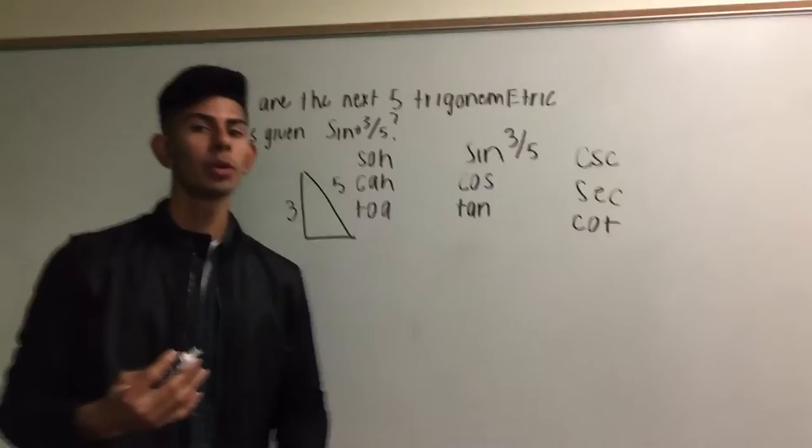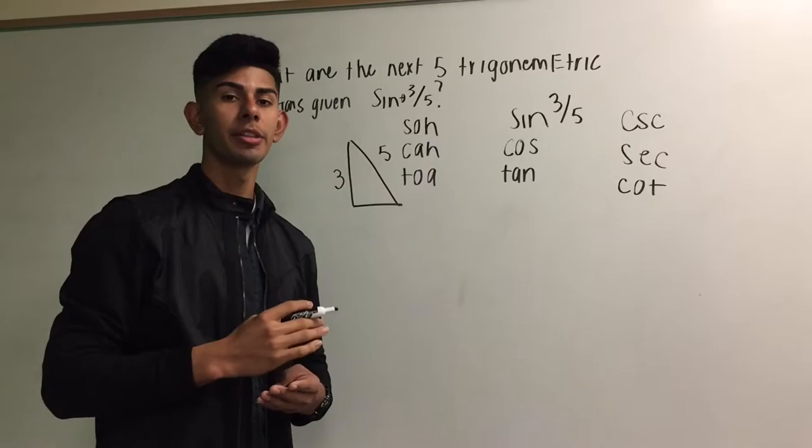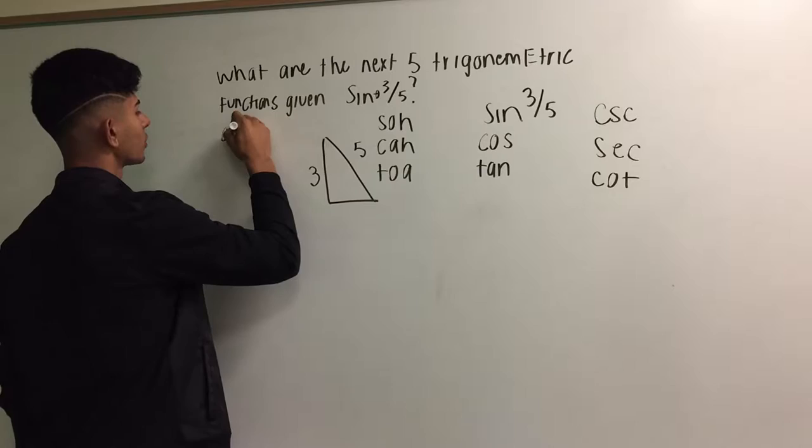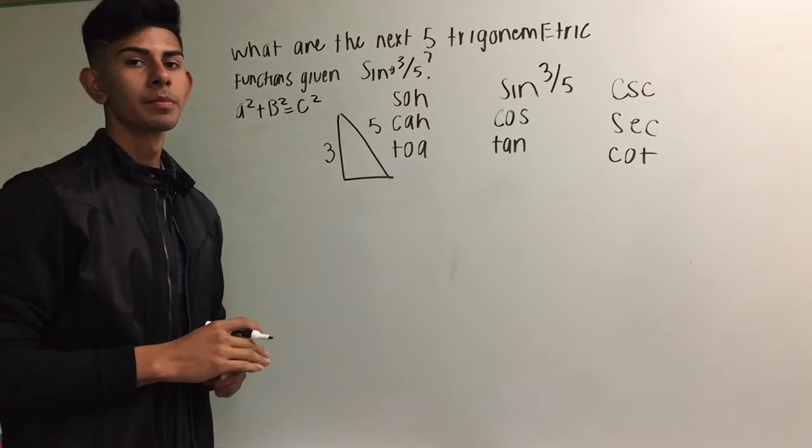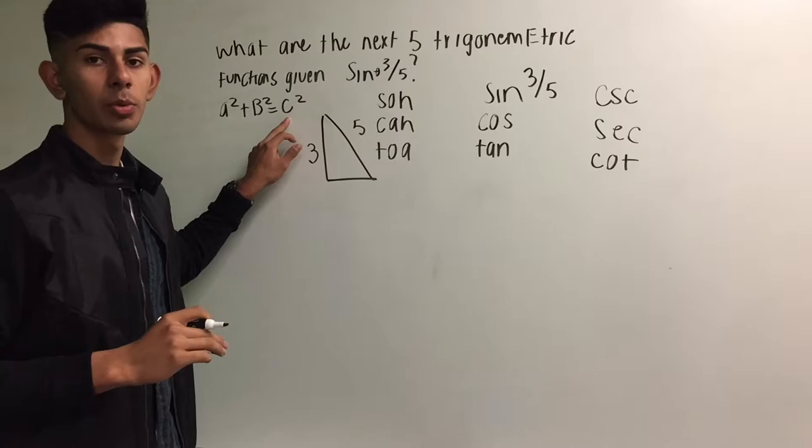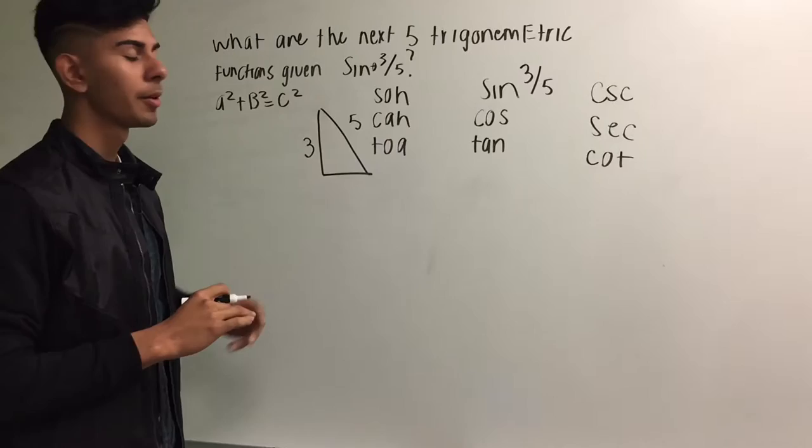You might be wondering, how do we find out the missing side of the triangle? So what we do is that we use the Pythagorean theorem to solve for the missing side. The Pythagorean theorem looks like A squared plus B squared equals C squared. One thing to remember about the Pythagorean theorem is that the hypotenuse is always going to be C squared. Again, no matter what, the hypotenuse will always be C squared.